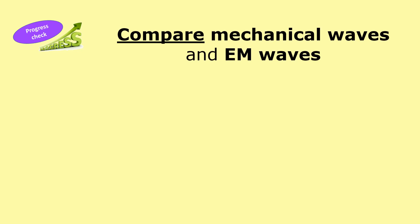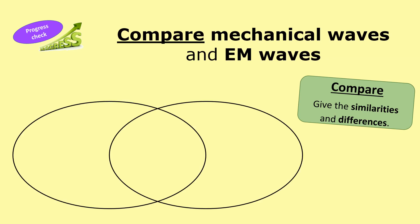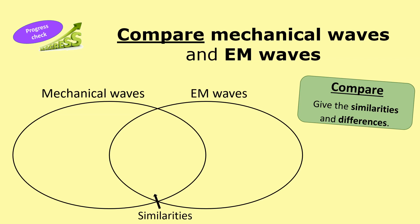Welcome back. You should now have a better understanding of what waves are and the difference between mechanical and electromagnetic waves. Let's do a quick progress check. What I'd like you to do is compare mechanical and EM waves — remember, when we compare, we need to give the similarities and the differences. One good way of doing this is using a Venn diagram, with mechanical waves on the left and EM waves on the right, and any similarities in the middle overlap section. Sketch this Venn diagram quickly, or use the one in the Google Doc.